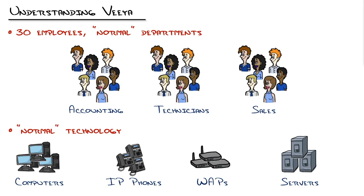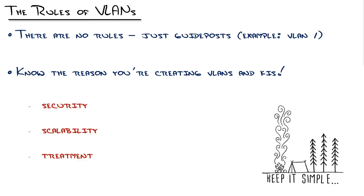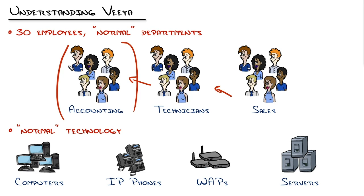Looking at the VIA organization, here's how you should be thinking about creating VLANs. The first question to ask is: are there security concerns or needed accommodations because of those concerns? We create VLANs when we have a need for security. The initial thought might be that accounting handles money and should be divided from other departments. But in today's modern world, that's not necessarily true — just about everything is cloud-based or stored on servers. There's very little chance of technicians or sales folks hacking into accounting PCs and getting anything of value, especially if those PCs are managed devices with adequate virus and malware protection.